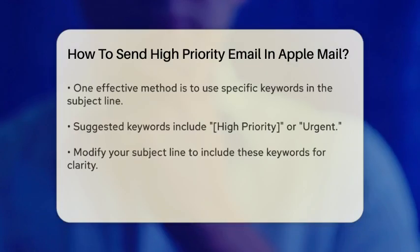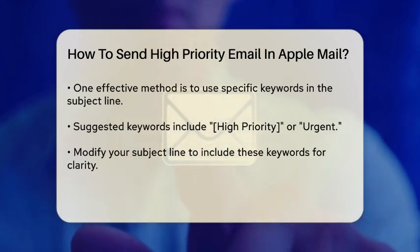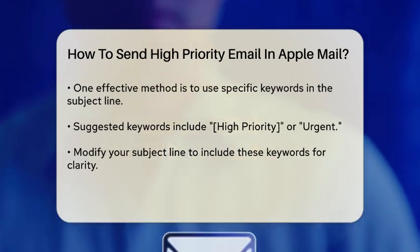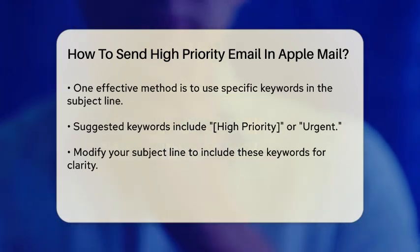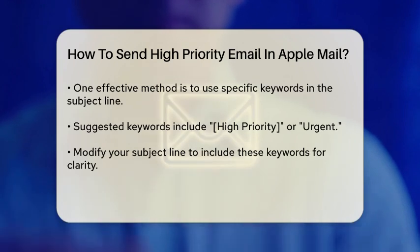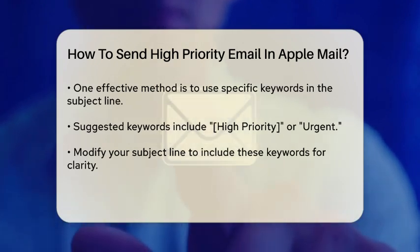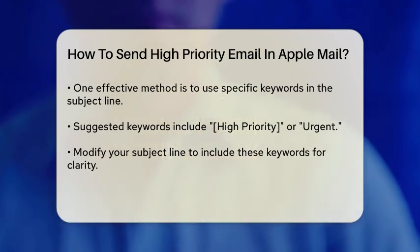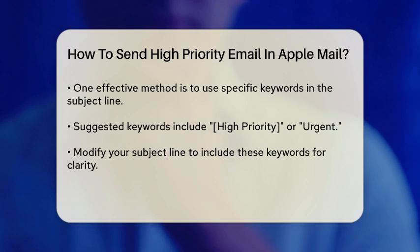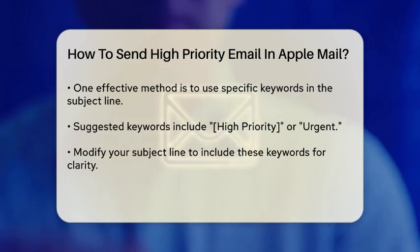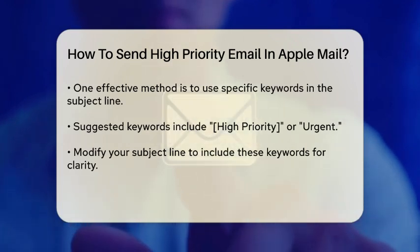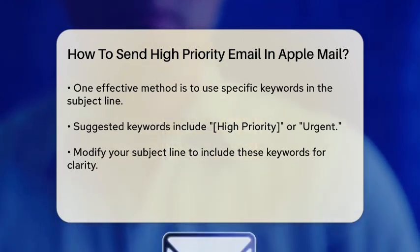One effective way to indicate the importance of an email is by using specific keywords or phrases in the subject line. For example, you can include 'high priority' or 'urgent' in the subject line. This way, the recipient can easily identify the importance of the email at a glance.